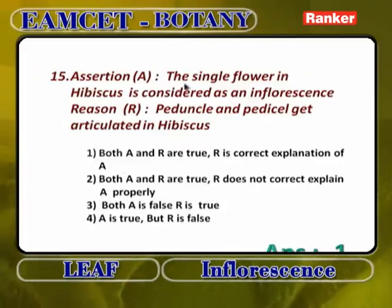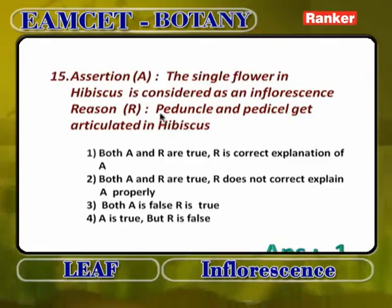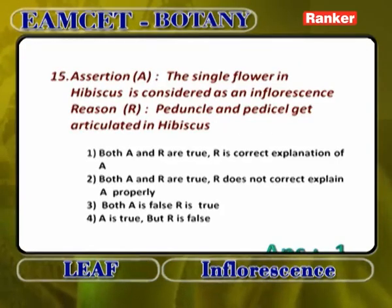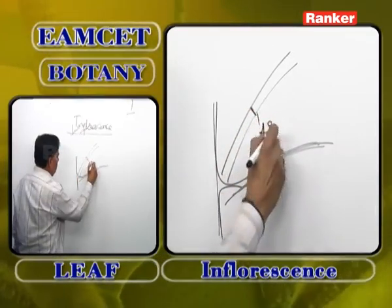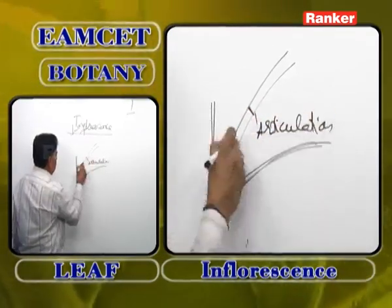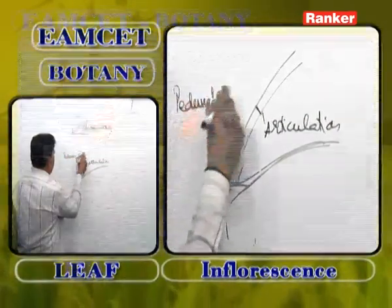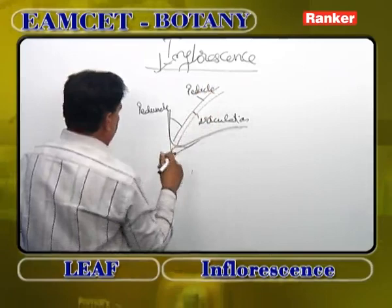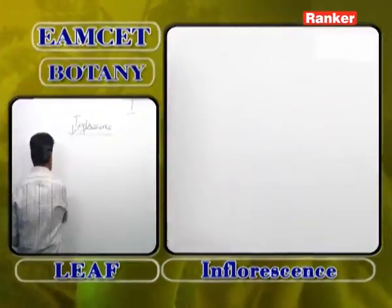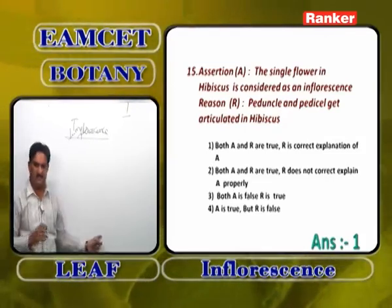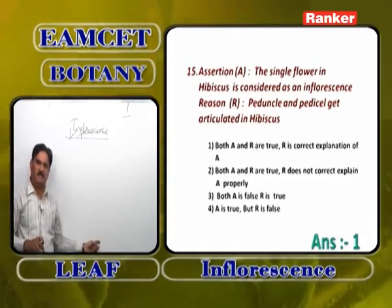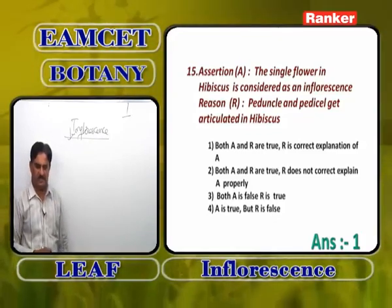Assertion: The single flower in Hibiscus is considered as an inflorescence. Reason: Peduncle and pedicel get articulated in Hibiscus. In Hibiscus, the inflorescence is axillary solitary cyme. The stalk shows a joint called articulation — the portion below the joint is the peduncle, the portion above is the pedicel. Both A and R are correct, and R is the correct explanation of A.